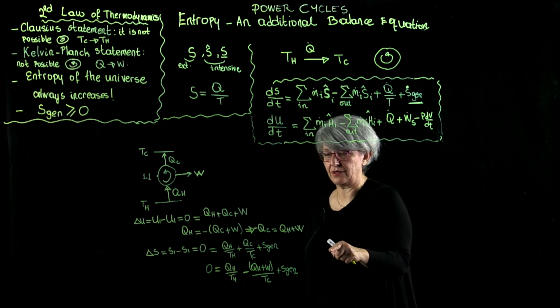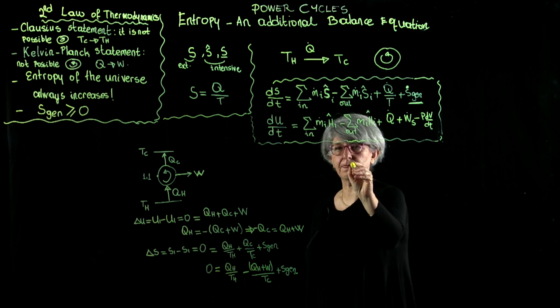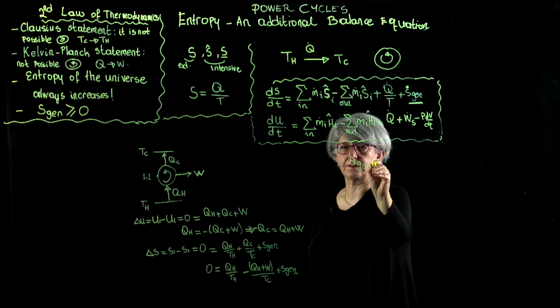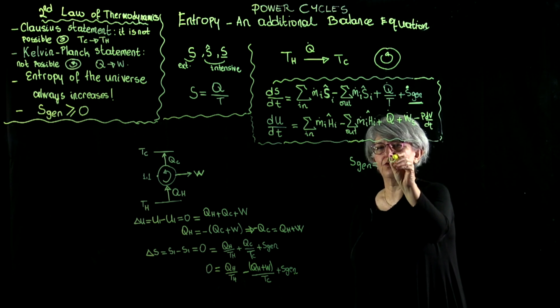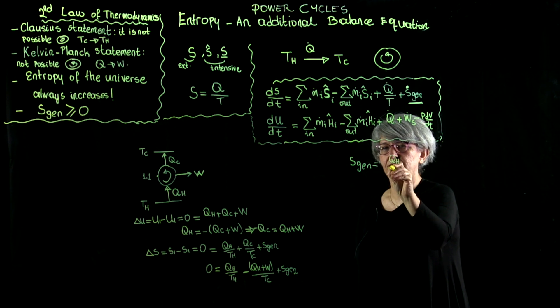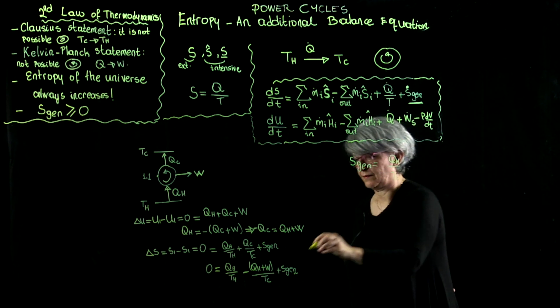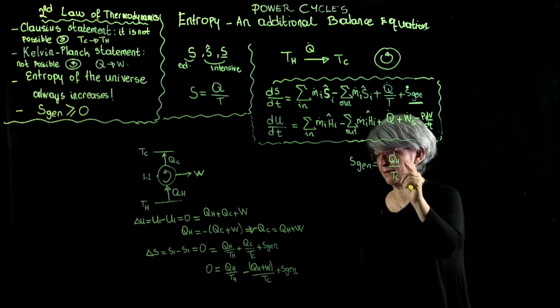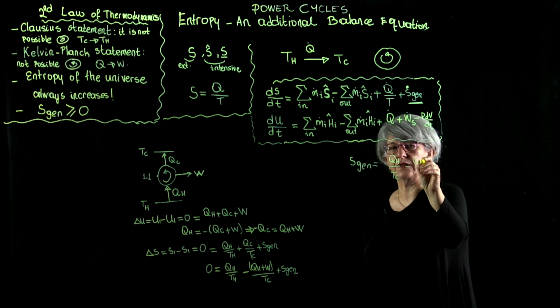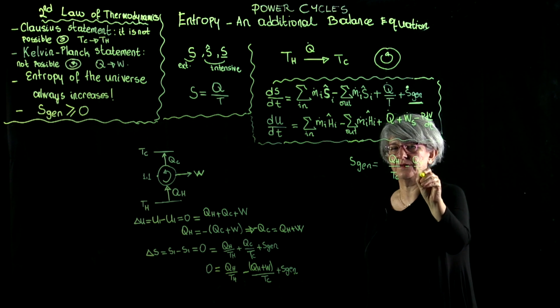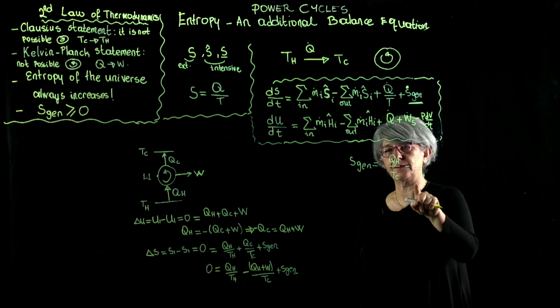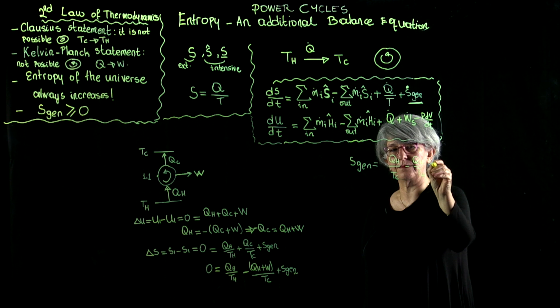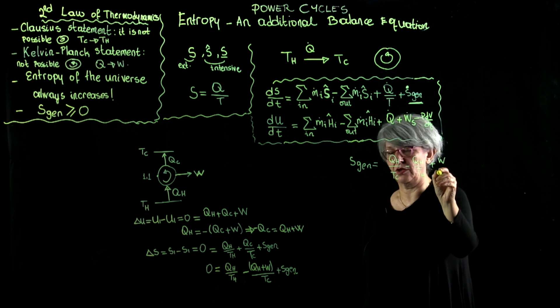Minus q hot plus work divided by t cold plus s generated equals zero. I will rearrange here. S generated is equal to q hot over t cold minus q hot over t hot, and then I have plus work over t cold.